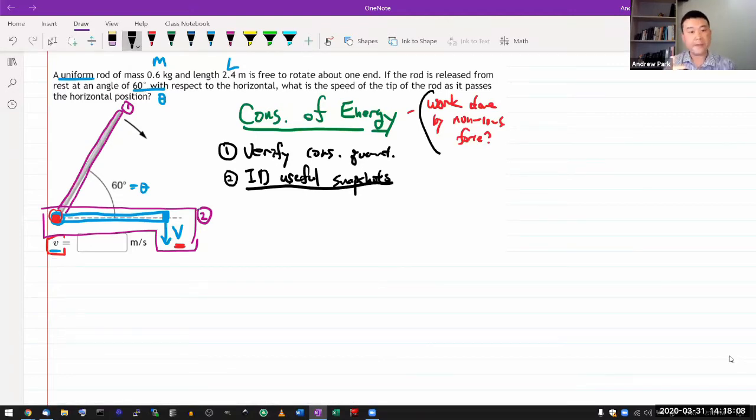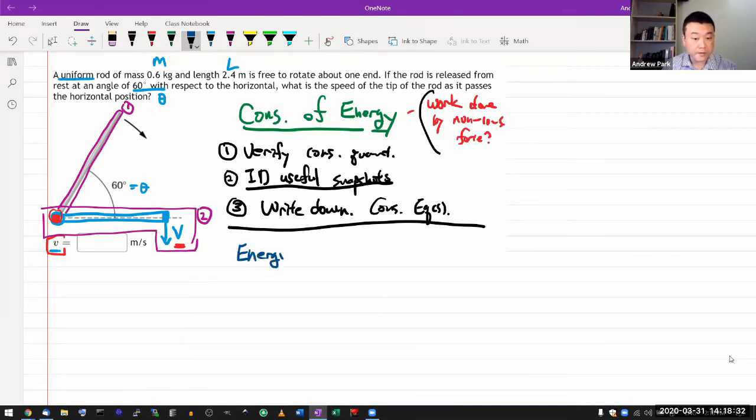By the way, this isn't like a standard strategy where there's an actual fixed four-step process. This is something I'm just making up, improvising as I go. But this is what I would like to do. So when I'm trying to identify useful snapshots, I look at what quantity is being sought. So I'm being asked for this quantity here. So this is going to be one of the snapshots. I need to include the moment in time when this rod is in the horizontal position. Let me call that my snapshot two. And the initial position is usually a useful snapshot to include. So let me call this snapshot one.